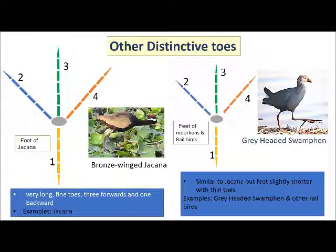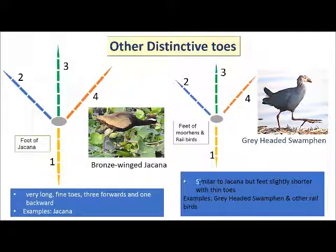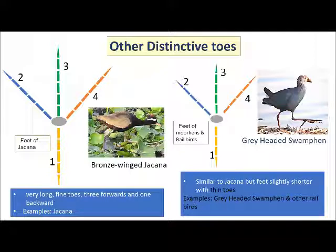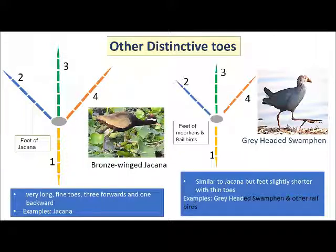This slide explains a few other distinctive toes, like in the jacana, which has very long and fine toes. Also, the grey-headed swamp hen and other wading birds have toes similar to the jacana, but the feet are slightly shorter. Thank you.